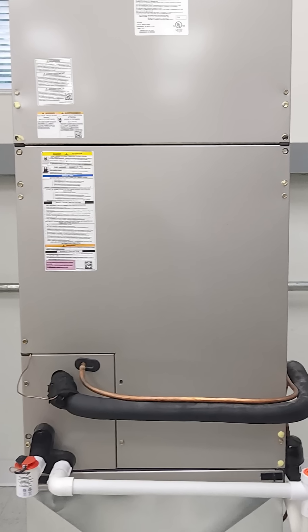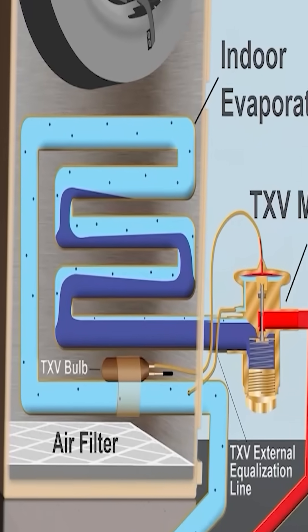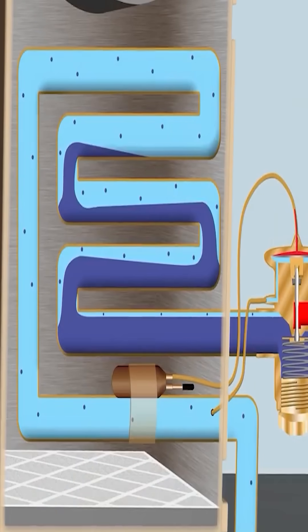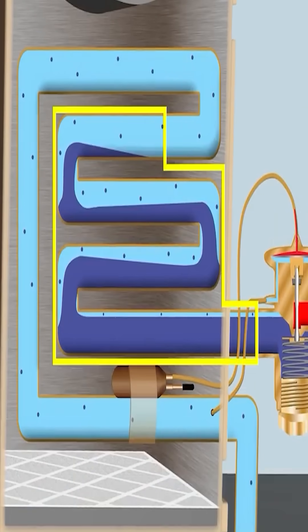Here we're looking at an air handler evaporator coil box and the thermostatic expansion valve which controls the superheat. Just to tell you what superheat is, this is saturated refrigerant right here.